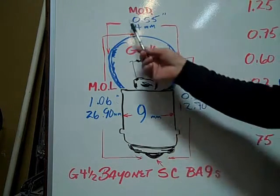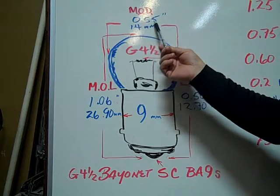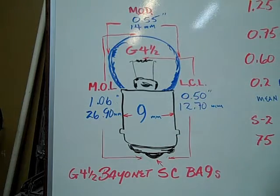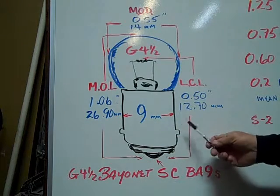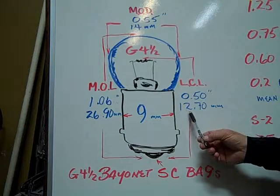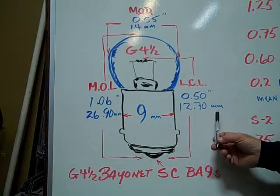The maximum outer diameter is 0.55 inches or 14 millimeters. The light center length is 0.50 inches or 12.70 millimeters.